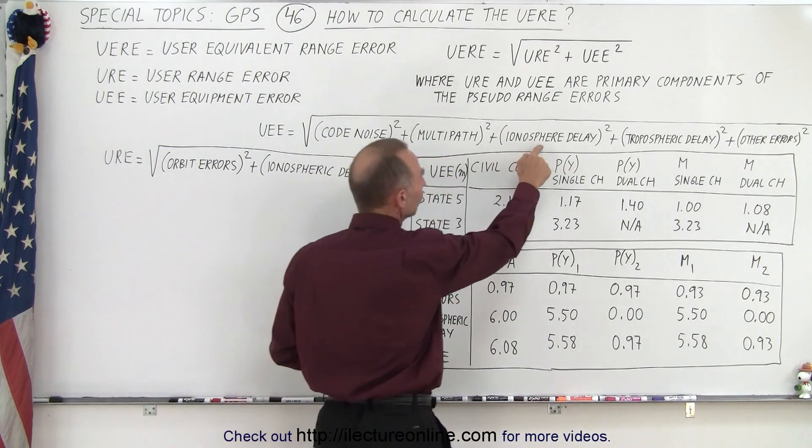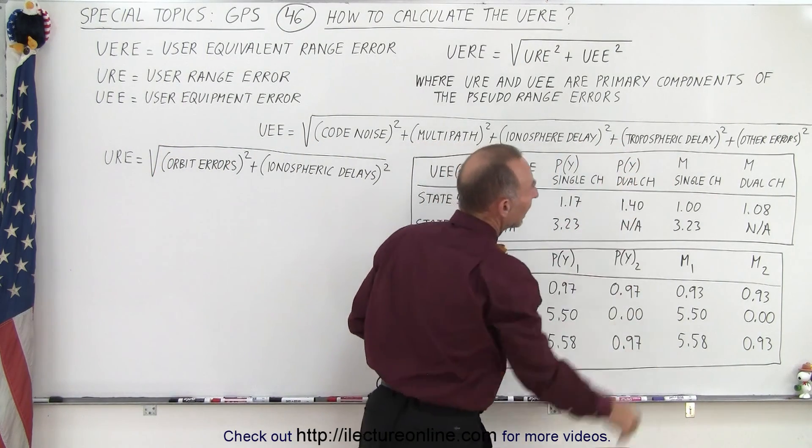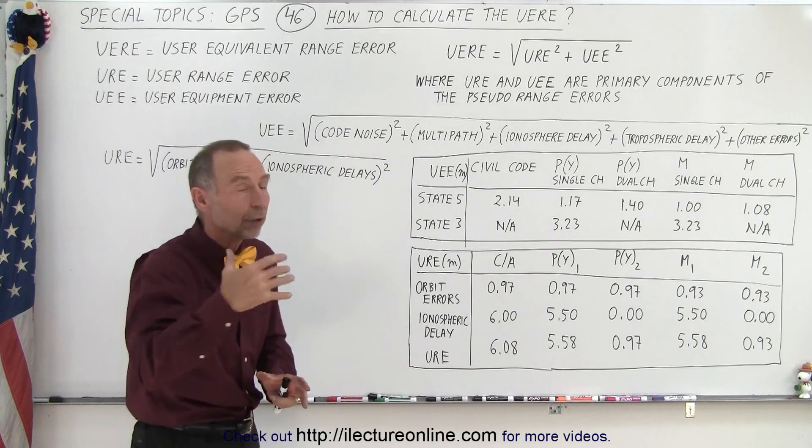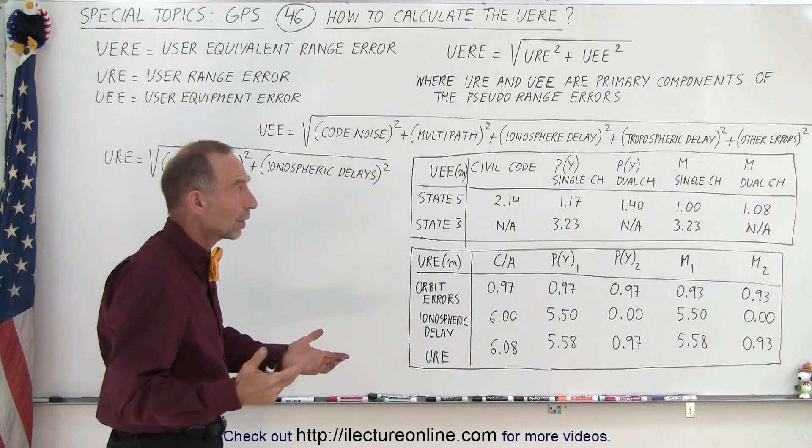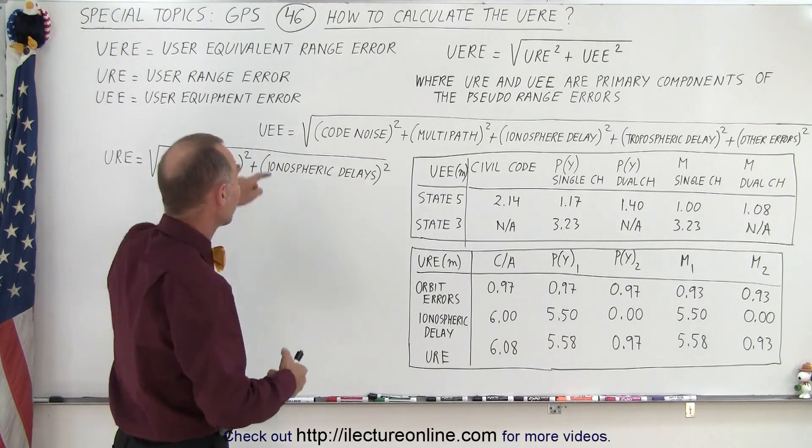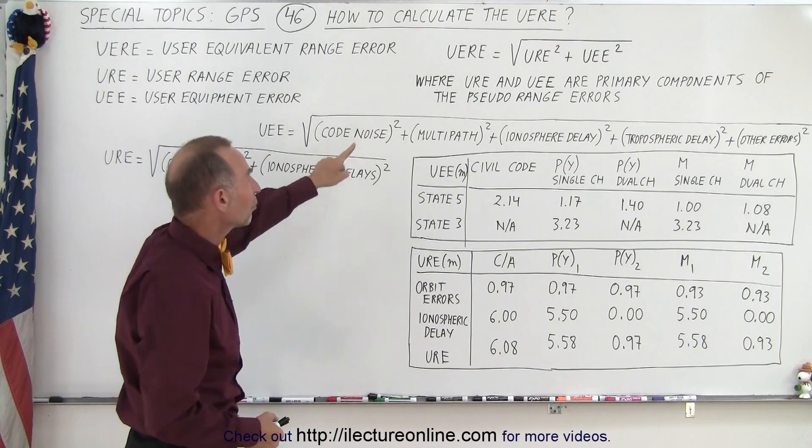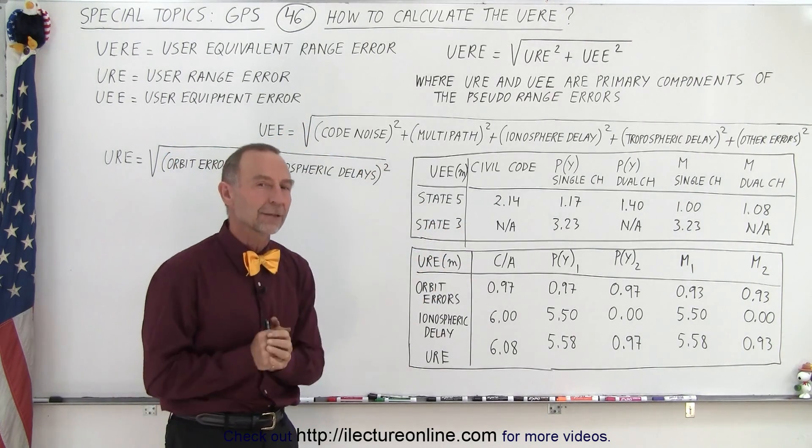So the UEE depends on the code noise, the multipath error, the ionosphere delay, the tropospheric delay, and any other errors you want to throw in there, such as the relativity errors. And to find the UEE value, we take the square root of each of the components squared and added together.